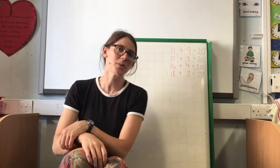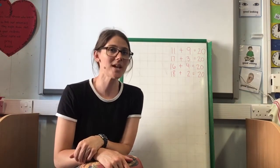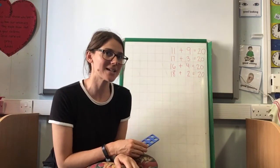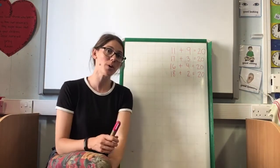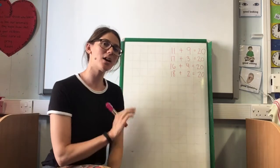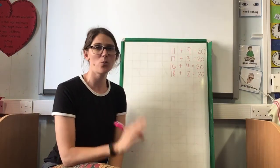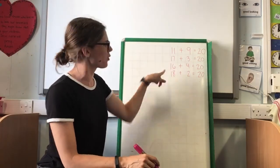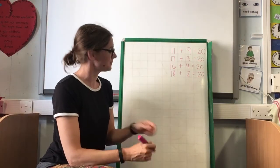So that's how we use Numicon to find our bonds to 20. Now if we want, we can work systematically. That's where we try and find all the bonds to 20 in a proper order, and that's a way that we make sure we don't miss any of them. Because at the moment I've only got 4 bonds to 20, and I think there are probably more than that.